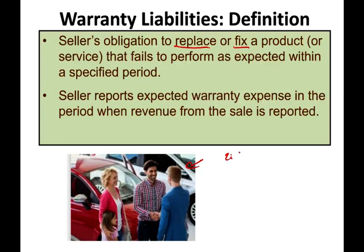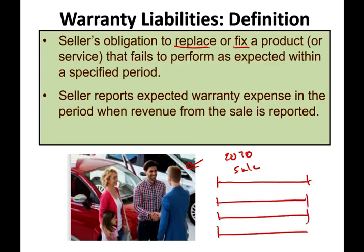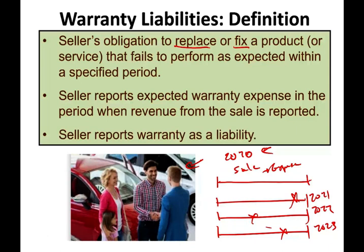Let's assume this is 2020 and a family purchased a car. The sale took place in 2020, and with this car comes a warranty guaranteed for three years — 2021, 2022, and 2023. When we sell the car in 2020, we have to report the expense, even though the actual warranty work may not take place until 2021, 2022, or 2023. We report the expense in the year the sale took place so we can match the revenue with the appropriate expenses. Therefore, we report it as an estimated liability.